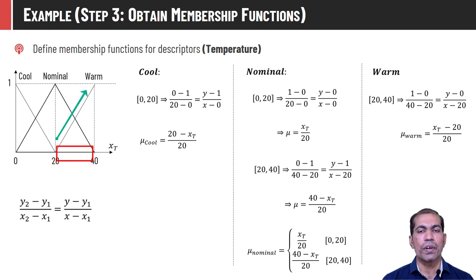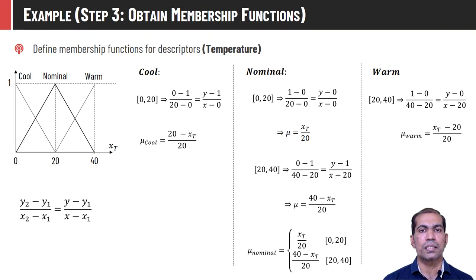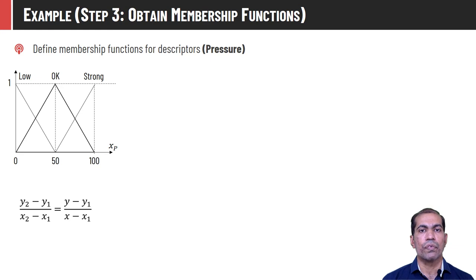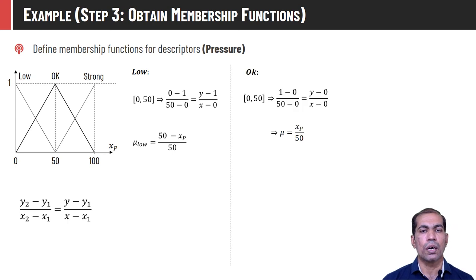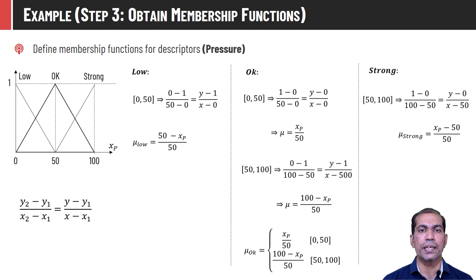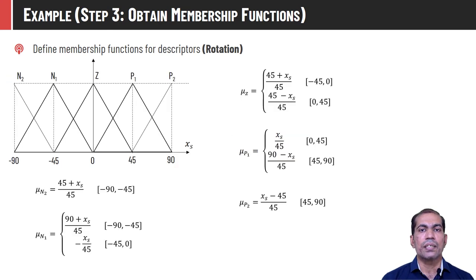In an identical way we compute fuzzy membership functions for pressure. xp represents the pressure axis, and low, okay, and strong are the three fuzzy subsets for a pressure range of 0 to 100. μ_low, μ_ok, and μ_strong are computed in the same manner as temperature. Similarly, membership values for the output parameter — μ_N2, μ_N1, μ_Z, μ_P1, and μ_P2 — are computed. The equations for all these membership functions are described.